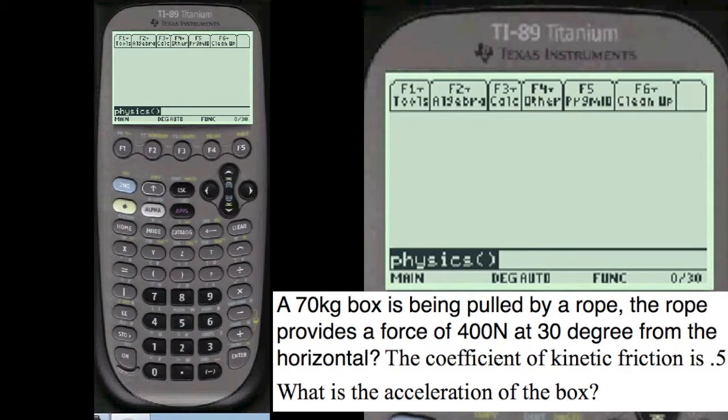We're going to do a physics problem with regard to a box being pulled along the horizontal surface, and it has a kinetic friction given. You can see what's given here, but what's given is the mass and the pulling force and the angle that it's pulling at, and then the coefficient of kinetic friction.